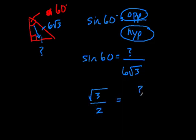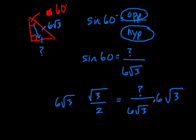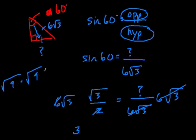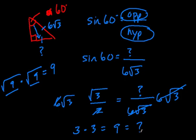So the square root of 3 over 2 equals our mystery side over 6 times the square root of 3. Just like before, I'm going to multiply both sides by 6 times the square root of 3, and those cancel out on the right. We have 6 divided by 2, which is 3, and the square root of 3 times the square root of 3 equals 3 — because the square root of anything times itself equals that number. So we have 3 times 3, which equals 9. Our mystery side equals 9.